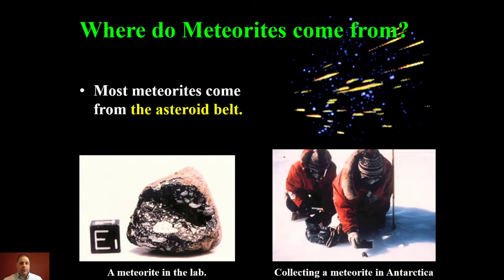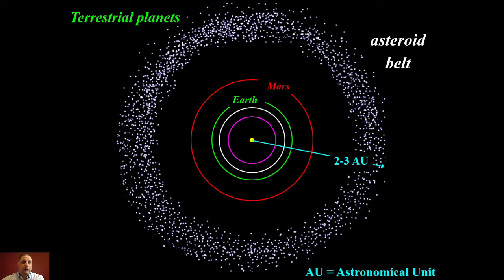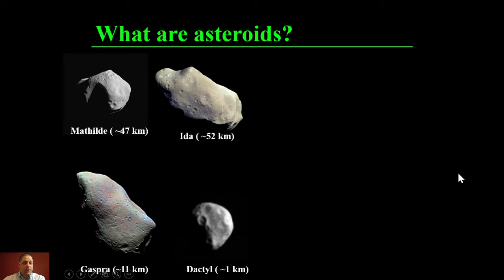Meteorites come from the asteroid belt, and they can be collected in places like Antarctica where they're easy to find because they stand out on the surface and tend not to break down very much. Looking at the solar system in general, we have the Sun, Mercury, Venus, Earth, Mars, and then up to three astronomical units away we have the asteroid belt, which has the objects that produce most of the meteorites.